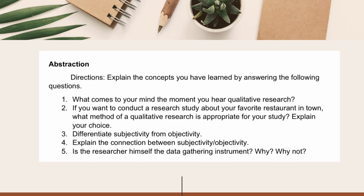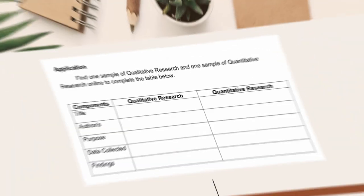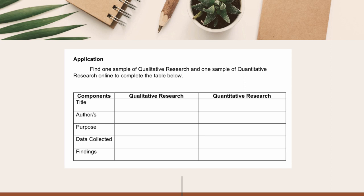Number four: Explain the connection between subjectivity and objectivity. Number five: Is the researcher himself the data-gathering instrument? Why or why not? Lastly, find one sample of qualitative and quantitative research online to complete the table. Look for the title of the study, name of the author, the purpose of the study, the data collected, and the findings.